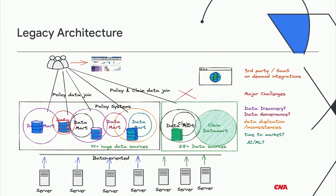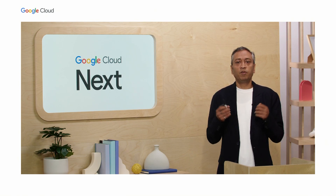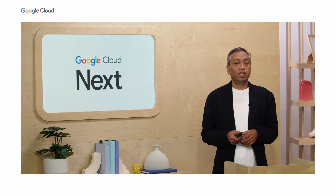Let's talk about the legacy architecture, which will resonate with many of you. We built this based on data sources and created multiple data marts on top, on a batch paradigm — data coming in daily, weekly, even monthly for some use cases. This introduced complexity such as data silos, data duplication, and difficult data governance. In the legacy world, today's standards weren't a priority. In the absence of proper tooling, even for simple data consumption, we relied on subject matter experts, and that's a real problem.